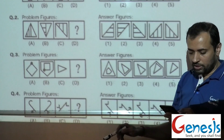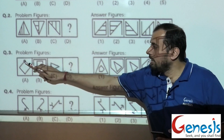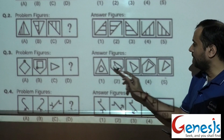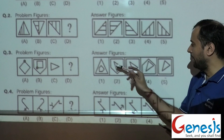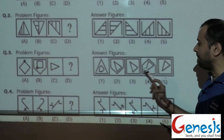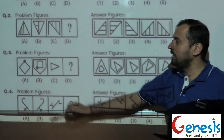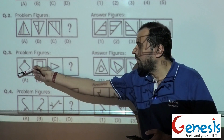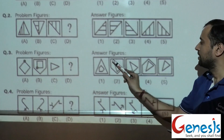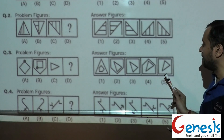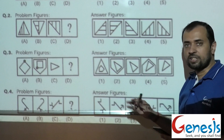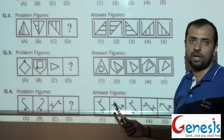Moving on to the third question: there is a quadrilateral inscribed in a pentagon. So this triangle should definitely be inscribed in a square in the next figure. Triangle inscribed in a square means either frame number 3 or frame number 5 has to be the correct answer. Among these two, the correct answer depends on the orientation of the triangle. The figure has been rotated 90 degrees and then 45 degrees in anti-clockwise direction. So this also would be rotated 90 degrees and then 45 degrees anti-clockwise, making the correct answer frame number 3, not frame number 5.